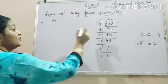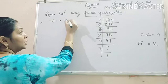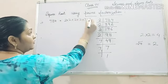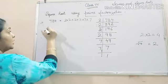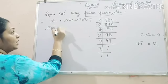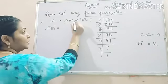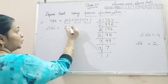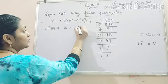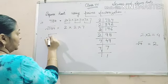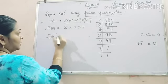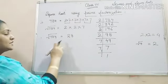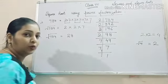So, we have to make 2, 2 pairs of this prime factors. So, under the root 784 will be equal to, from each pair, we will take out one factor. 2, 2, 7. 4 times 7 is 28. So, square root of 784 is equal to 28.